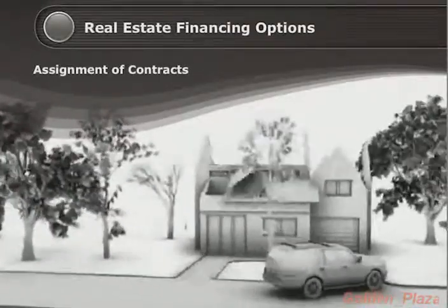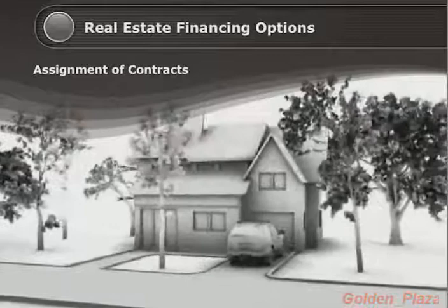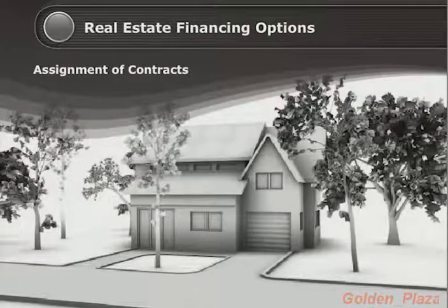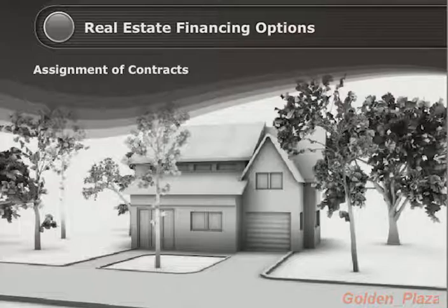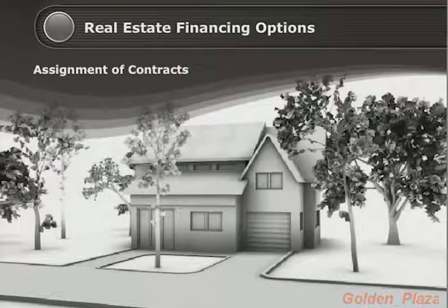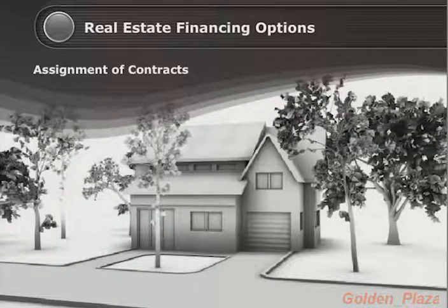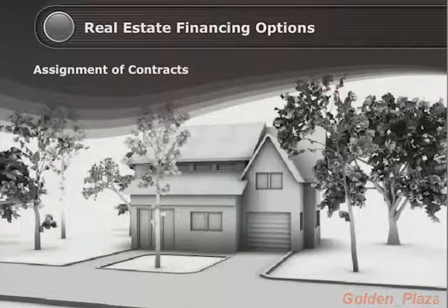In this lesson you will learn about assigning contracts. If you have some time, a minimal amount of money, and even so-so or bad credit, assigning contracts can be a great fast cash investment strategy and a great way to build capital and learn real estate investing. It requires that you network with buyers and sellers and maintain a marketing list. This is often categorized as wholesaling property because you will need to put the property under contract for a low enough price that you can get an assignment fee and your end buyer can secure a decent profit for themselves too.